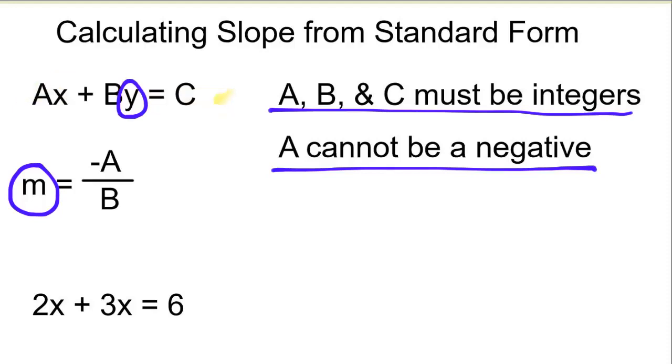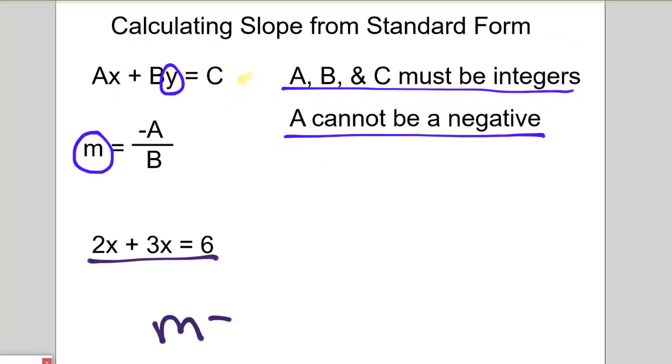So what is the slope of this equation? Remember, slope is m. And what I would do is I would identify the A value and the B value. So A is 2 and B is a positive 3. Notice how I include the positive sign there.